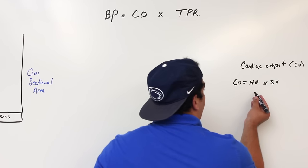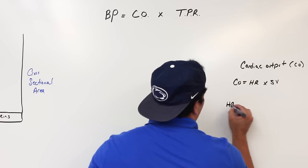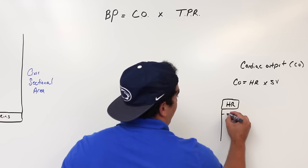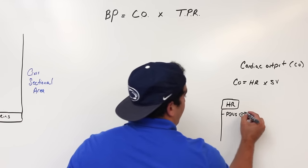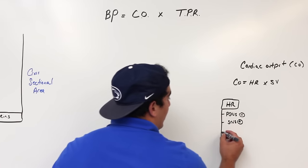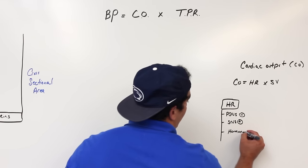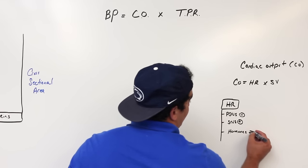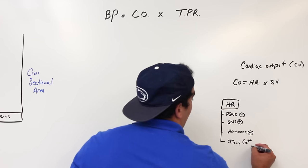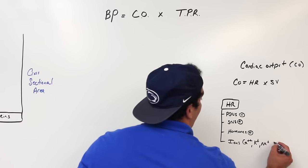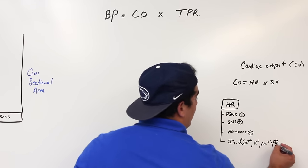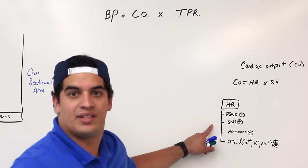What affects your heart rate? Your heart rate can be affected by your parasympathetic nervous system, which slows it down, and your sympathetic nervous system, which increases it. It can also be affected by hormones such as epinephrine and thyroid hormone, and by ions like calcium, potassium, and sodium — depending on their levels, these can either increase or decrease heart rate.